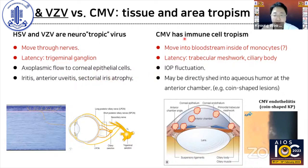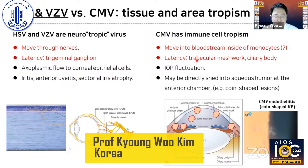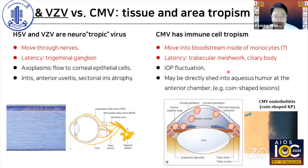On the other hand, CMV virus is immune cell trophic. CMV virus primarily hides in the bone marrow and secondarily lies in the trabecular meshwork and ciliary body. In this region, CMV endothelitis increases intraocular pressure very frequently. It may be directly shed into the aqueous humor, producing coin-shaped KP at the corneal endothelial layer.